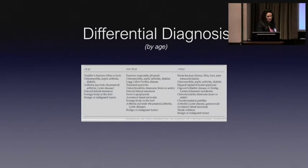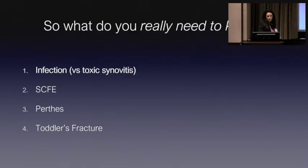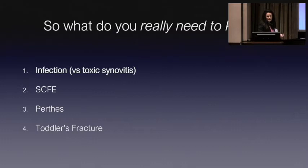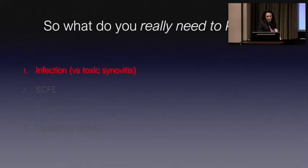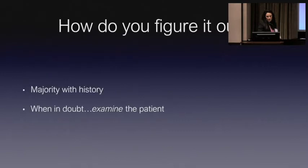The differential diagnosis has like 30 things on the list, and I can probably think of 30 more. So what are we really going to talk about today? Out of that list, these are probably the most common or the most important things — things you don't want to miss. We're going to talk about SCFE, Perthes, and toddler's fracture later in various talks, so I'm going to leave those alone. We're really going to focus here on infection and infection mimickers.